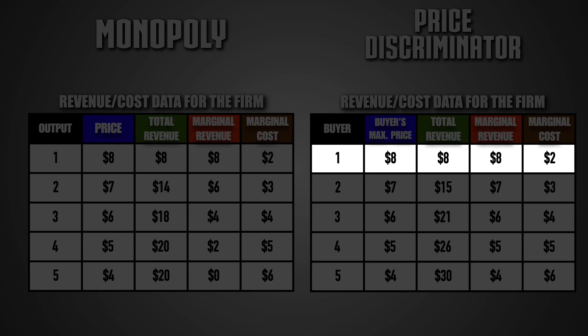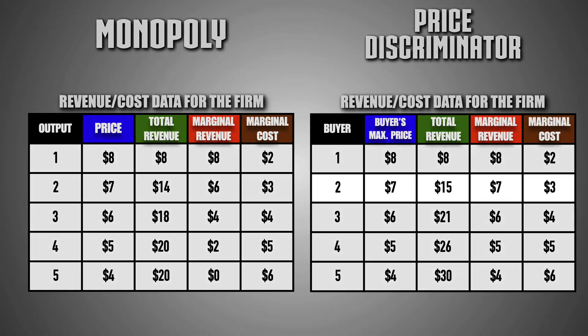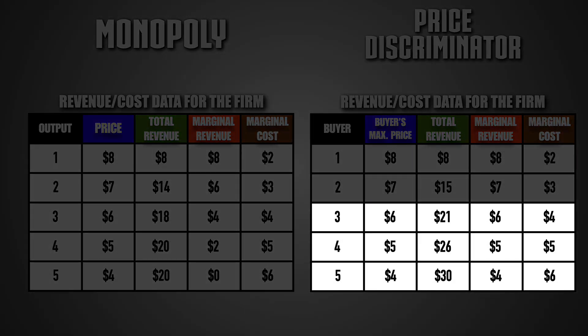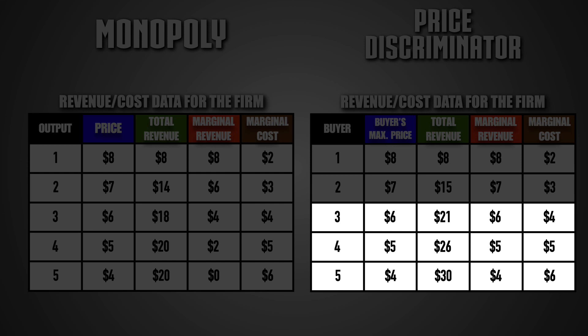The price discriminator will then charge the second consumer their buyer's maximum of $7, increasing the firm's total revenue to $15. When the third, fourth, and fifth consumers pay their own buyer's maximum of $6, $5, and $4, the firm's total revenue increases to $21, $26, and $30 respectively.